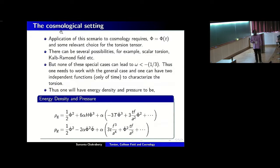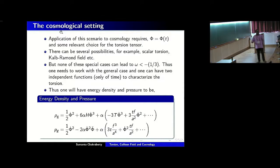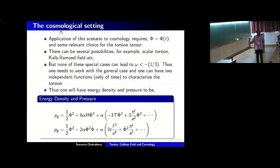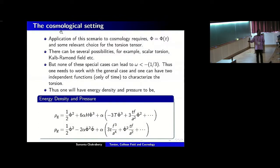For cosmology, we require φ to be a function of time. For torsion, there are several possibilities one can consider — for example, scalar torsion, or the Decauld-Brahman field — but in all these simpler cases, there is no way to cross the barrier ω = −1/3, which is necessary for dark energy behavior and late-time acceleration. In the general case, it turns out you need two independent functions of time, capital T and small t, giving expressions for the energy density and pressure. The terms without torsion are recovered in the absence of T and t, while torsion introduces additional contributions. You then solve Einstein's equations together with these energy density and pressure expressions to see whether solutions exist that lead to late-time acceleration.